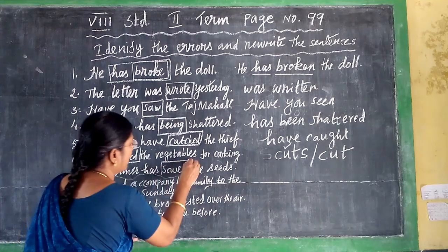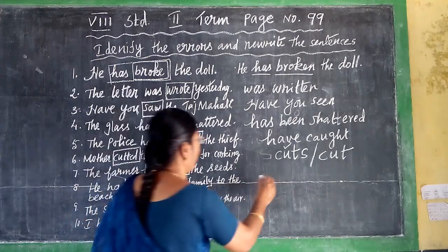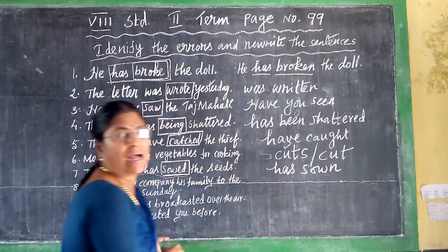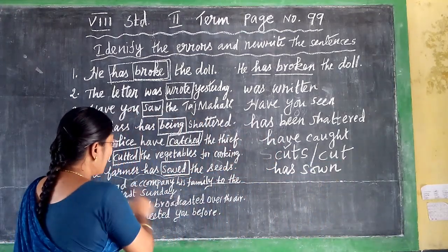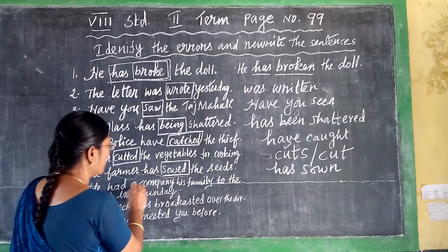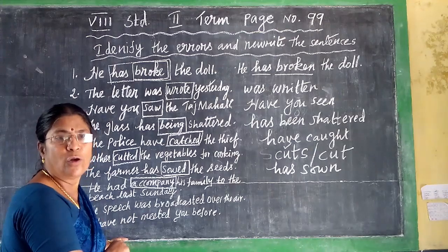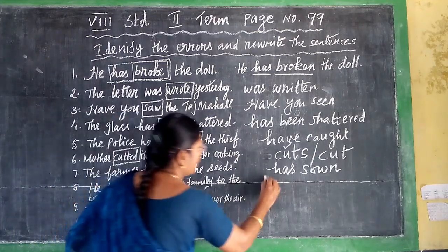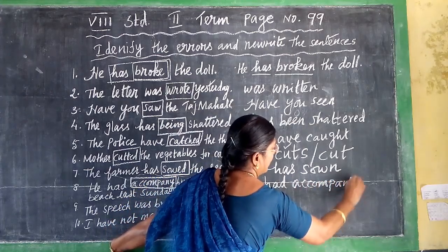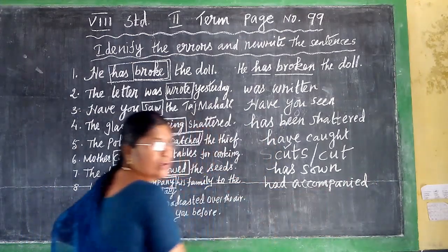Next: 'The farmer has showed...' — since have or has is followed by the 3rd form of the verb, the correct answer is: 'I have shown.' Then: 'He had accompanied his family to the beach last Sunday.' Here, 'had' is followed by only the 3rd form of the verb. 'Accompanied' is the 3rd form, so the correct answer is: 'He had accompanied his family to the beach last Sunday.'